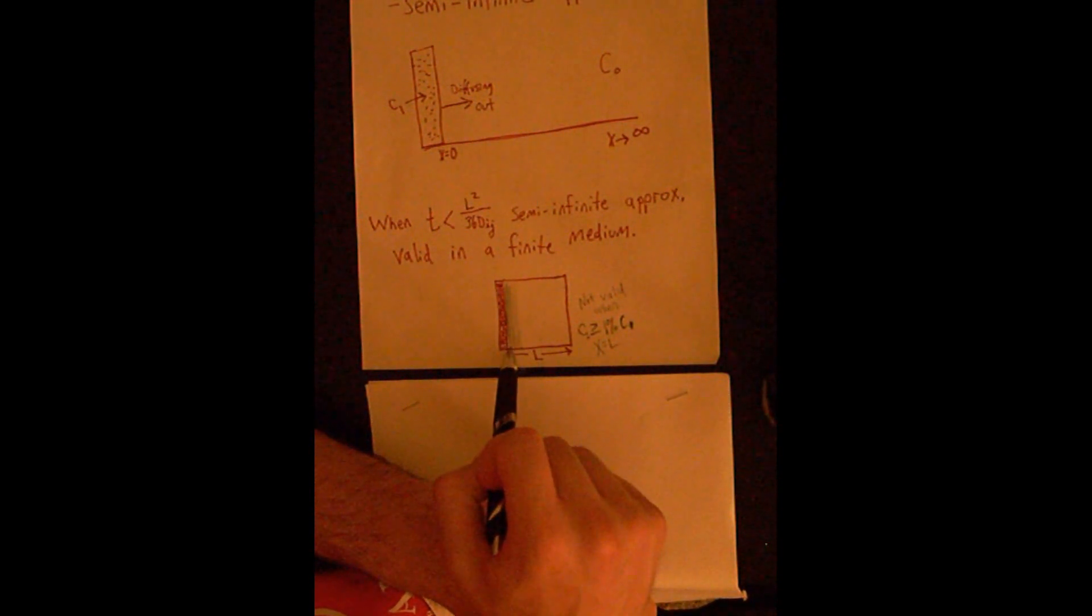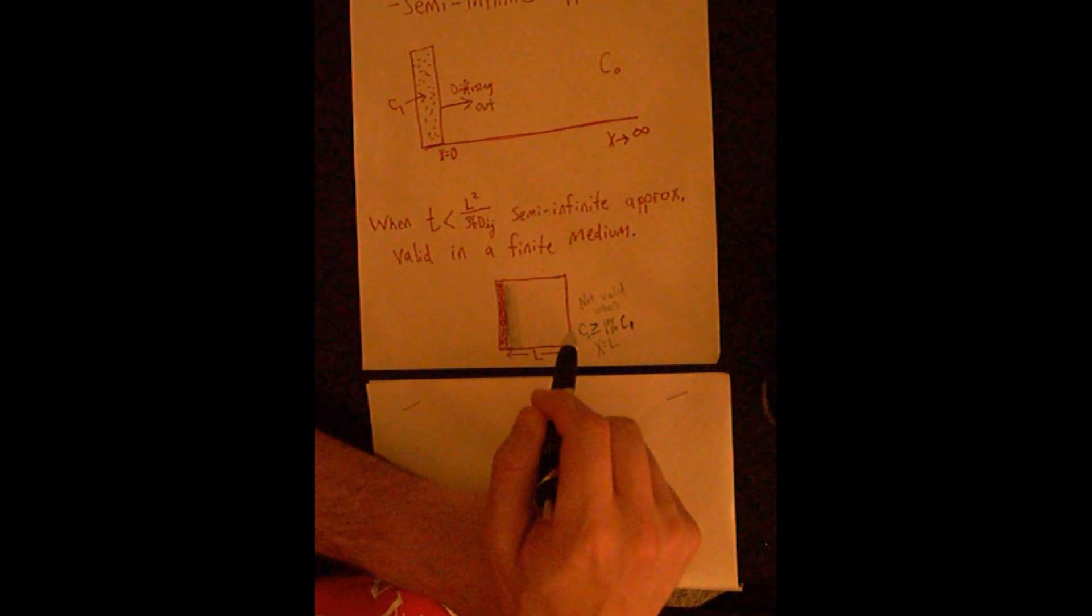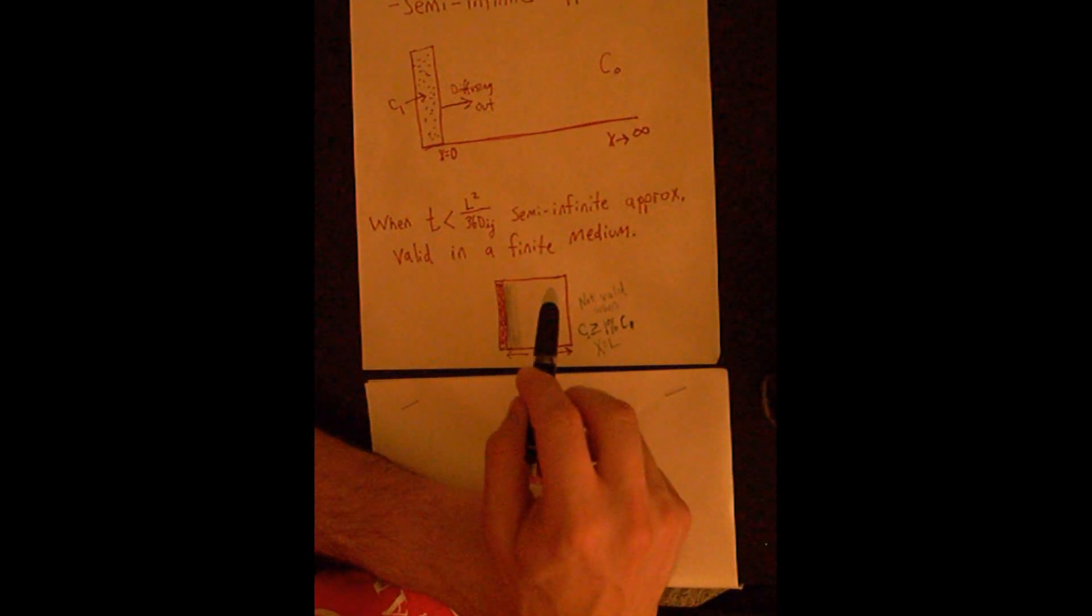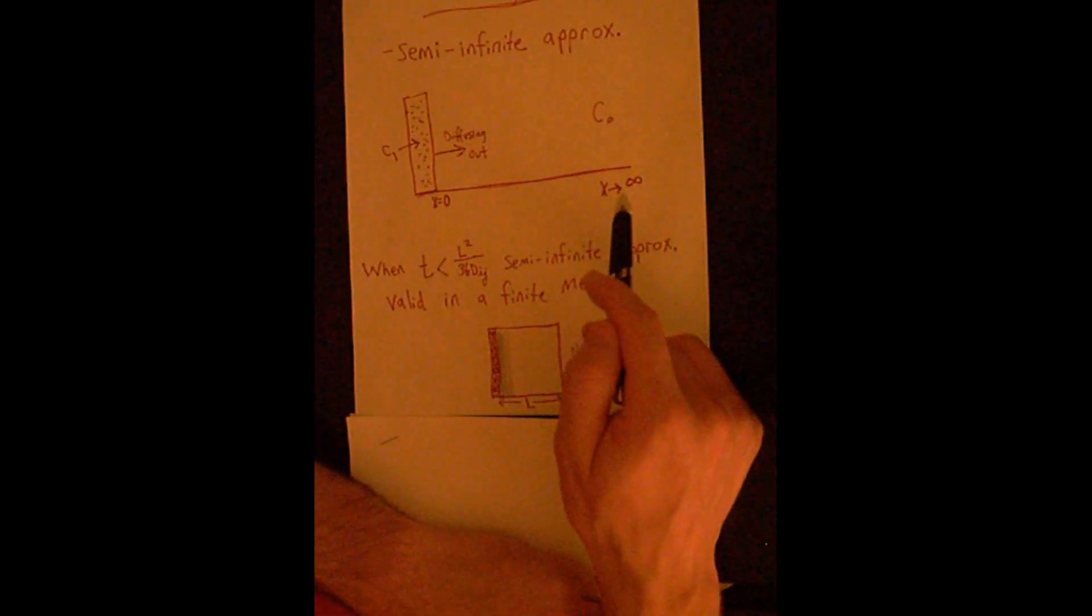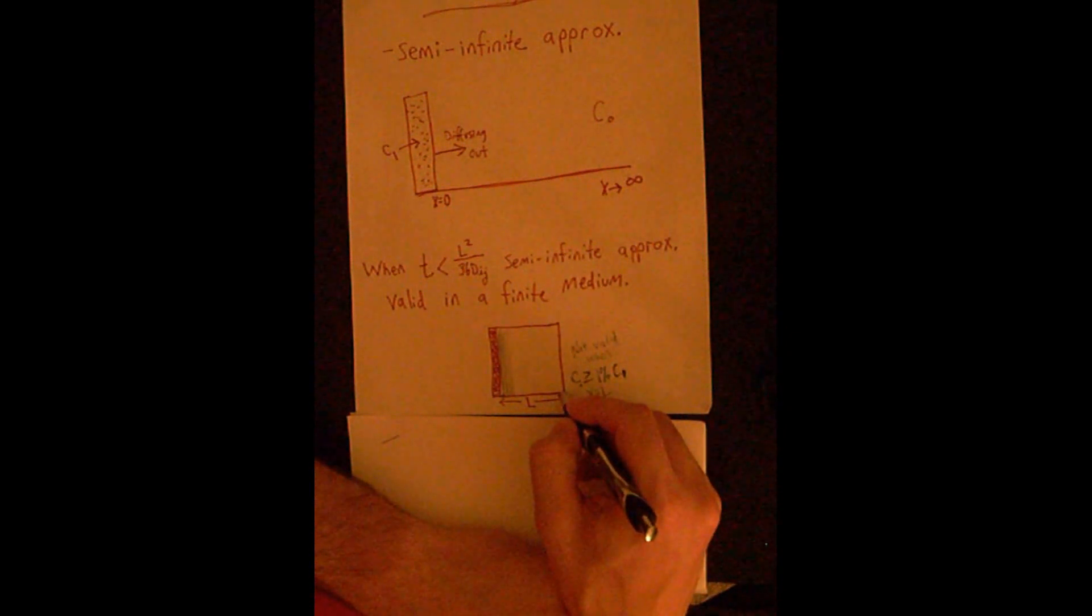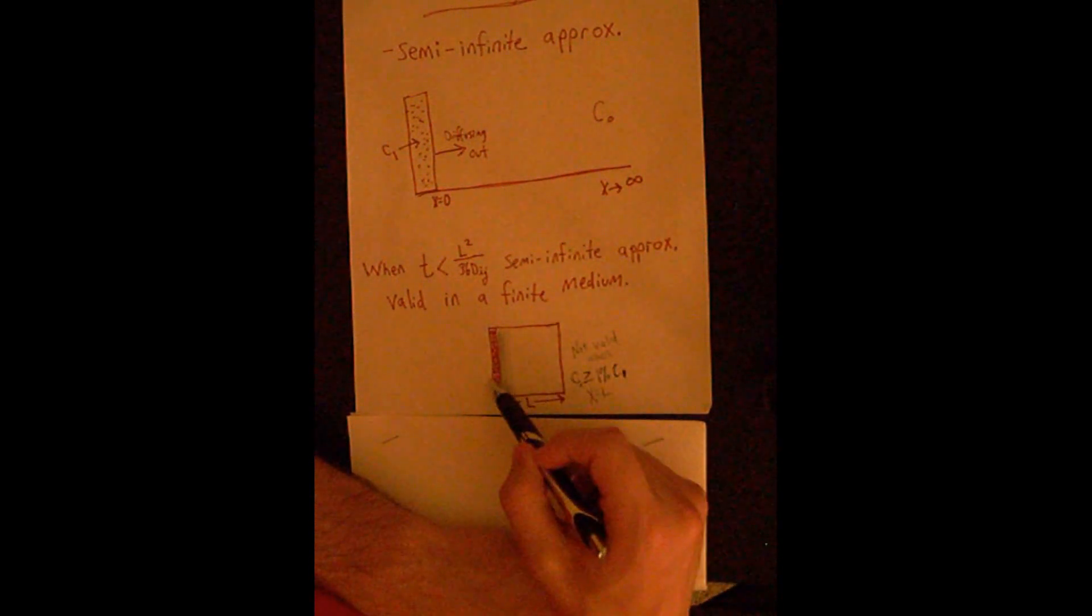So once the point at x equals L, when the concentration reaches 1% of that original concentration C1, at that point, that means there's enough concentration throughout the whole tissue to say that the semi-infinite approximation would not be valid because that concentration has reached all the way over to this side of the tissue. We don't have that situation anymore where the initial concentration C0 is still remaining at x equals infinity, because this would be considered what you would think of x equals infinity, but now the concentration's actually changed.